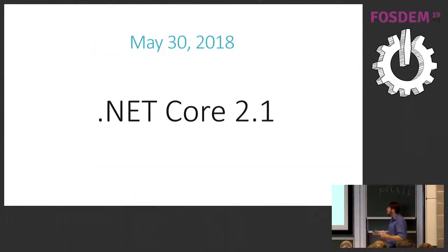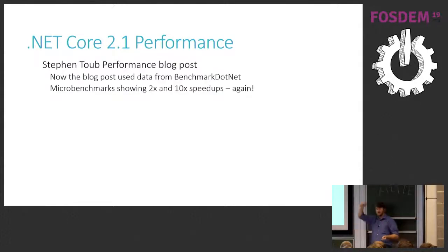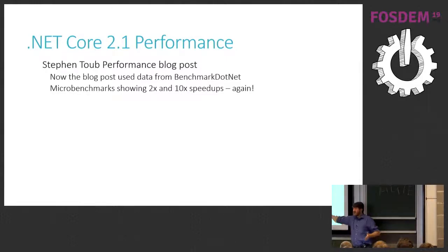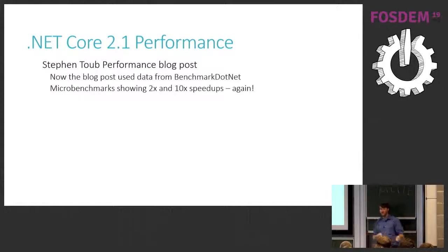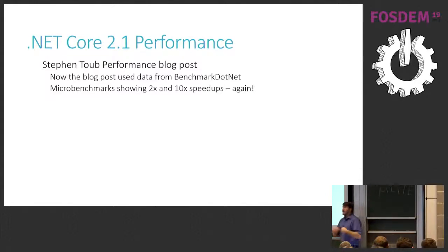In 2018, .NET Core 2.1 came out with another performance blog post based on benchmark.net showing two to ten times speedups over .NET Core 2.0. That's amazing — already fast and getting even faster. The microbenchmarks were all over the place, and the cultural shift started by that original benchmark.net blog post caused the .NET Core team to chase small improvements throughout the framework, making a real big difference in speed for all of us as users.